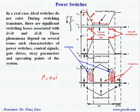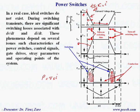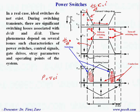This voltage change — dv/dt — if there is any stray capacitance in the system, creates significant leakage current. And this current change — dI/dt — if there is any stray inductance, creates significant overvoltage.